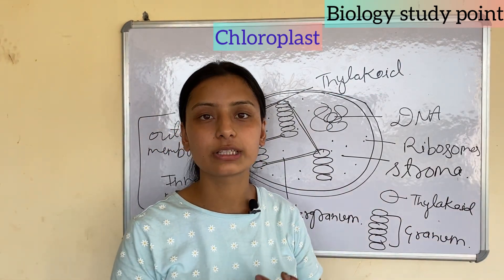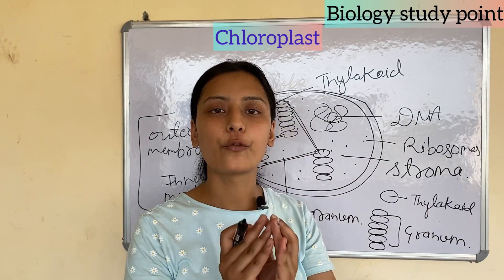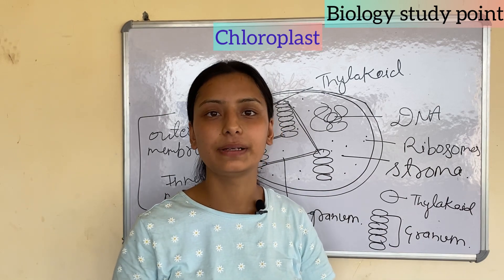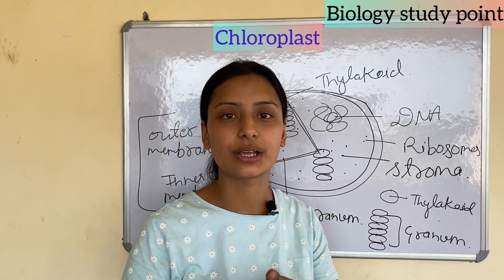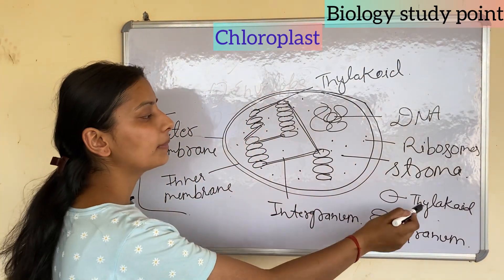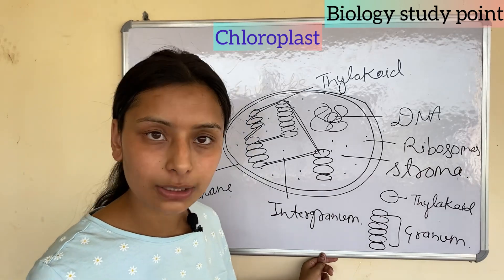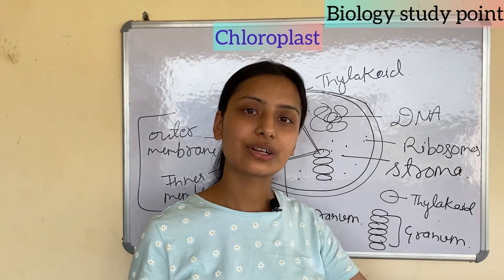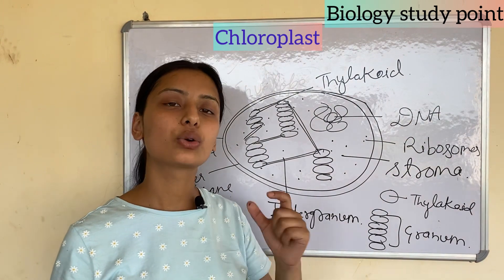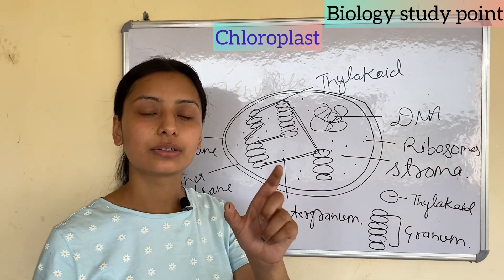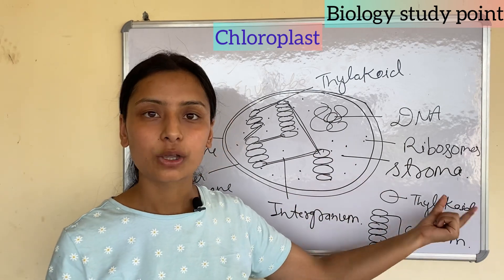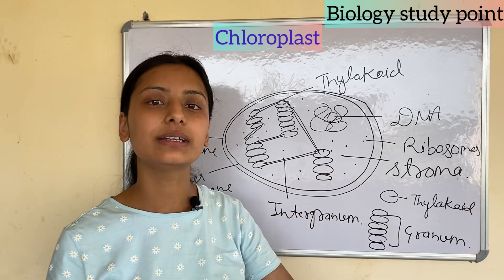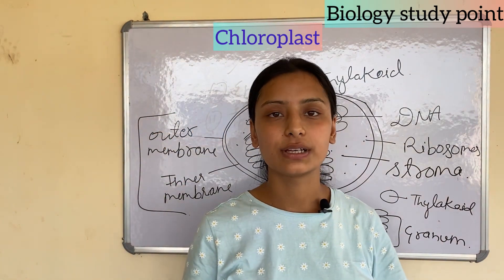In the stroma there are protein molecules and ribosomes. The key point is that the dark reaction of photosynthesis takes place in the stroma. Photosynthesis has two reactions — light reaction and dark reaction. The light reaction occurs in the thylakoid because chlorophyll is present there. The dark reaction, which occurs in the absence of sunlight, takes place in the stroma.